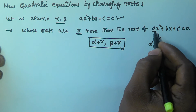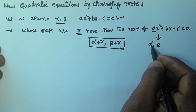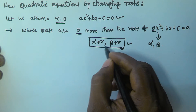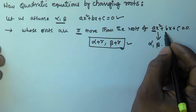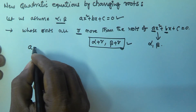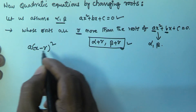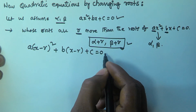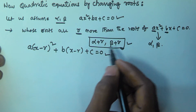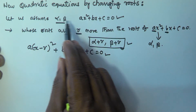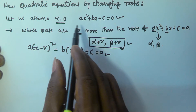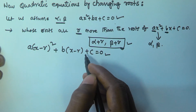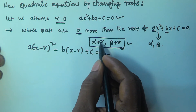So the equation is given by — based on the original equation whose roots are alpha and beta, we substitute (x minus r) in place of x, so that the roots of the new equation become alpha plus r and beta plus r. We rewrite the equation in the form: a(x - r)² + b(x - r) + c = 0. So if the roots of ax² + bx + c = 0 are alpha and beta, then the quadratic equation whose roots are r more than this is given by a(x - r)² + b(x - r) + c = 0, and its roots are alpha plus r and beta plus r.